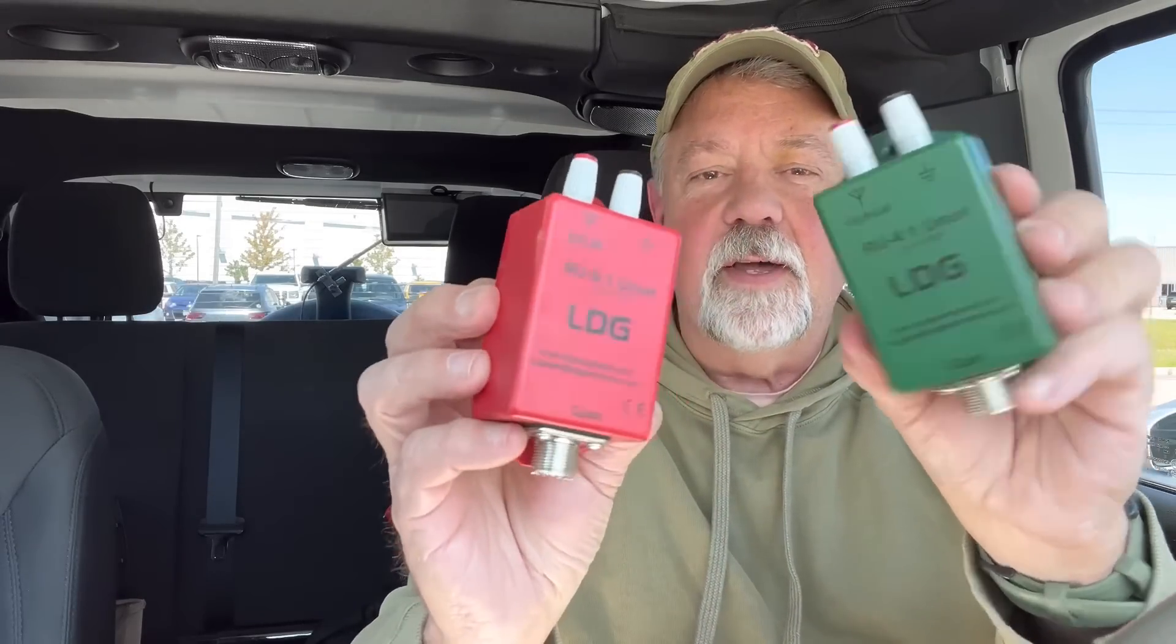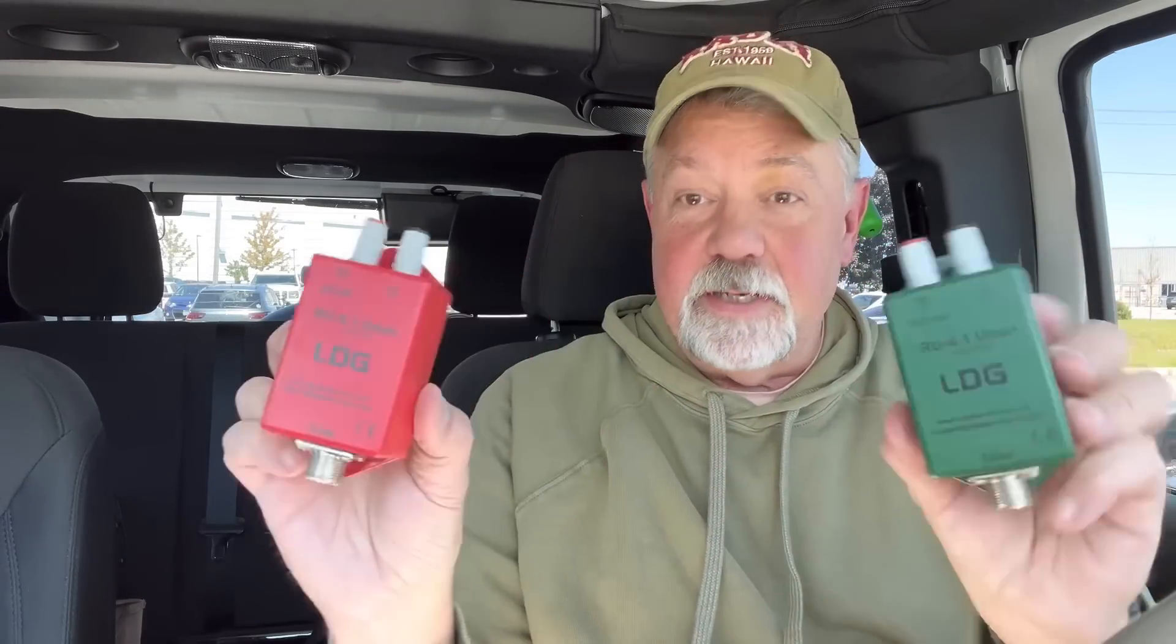A question I get on this channel a lot is, hey Walt, you use these four to one and nine to one ununs, and these are my go-to, my LDGs I use all the time in making antennas. How do we know which one to use? And how do you calculate feed point impedance?